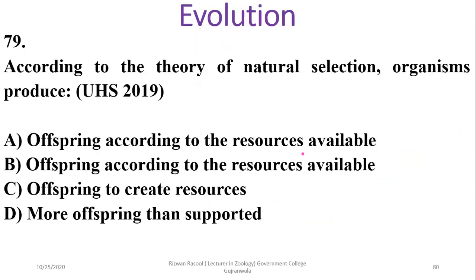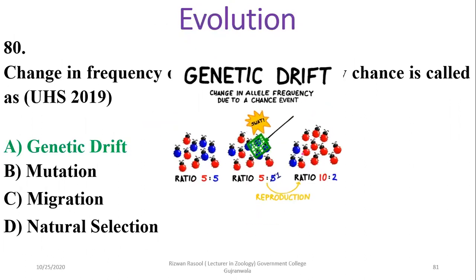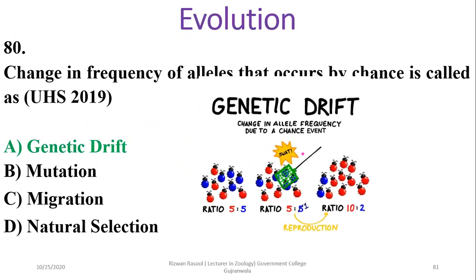Question 79: According to the theory of natural selection, organisms produce more offspring than the environment can support — more than the environmental carrying capacity — so delta. Question 80: The loss or change in frequency of a gene that occurs by chance is called genetic drift. It is a chance event that may reduce specific gene frequency. Alpha is the right option.